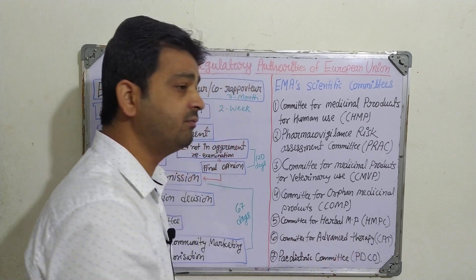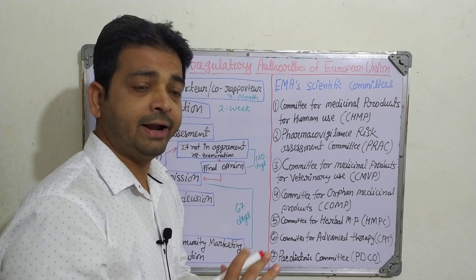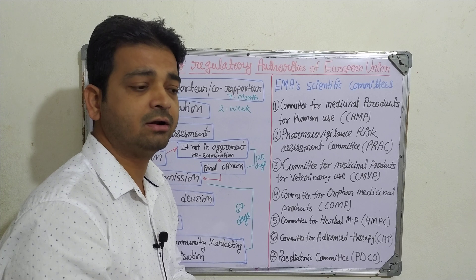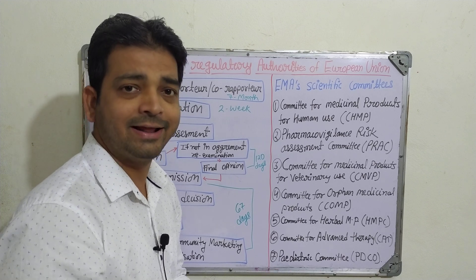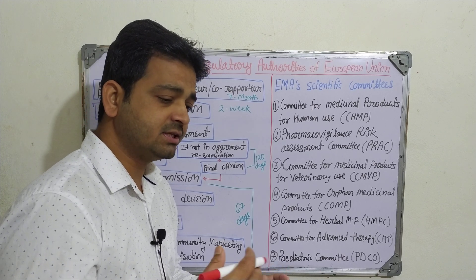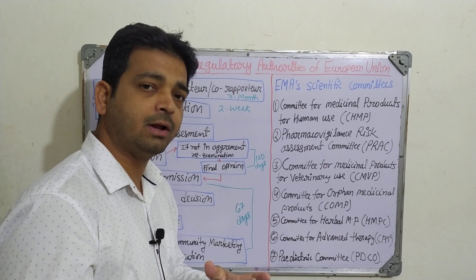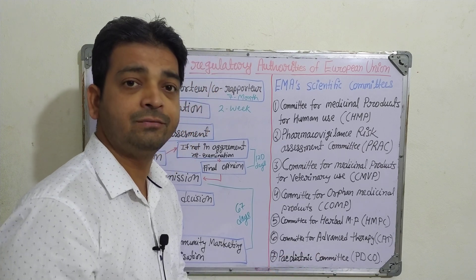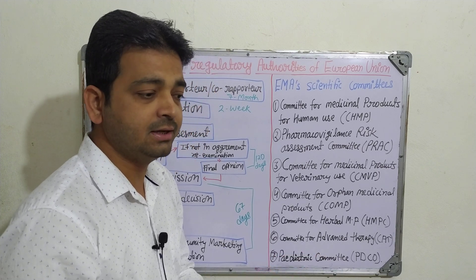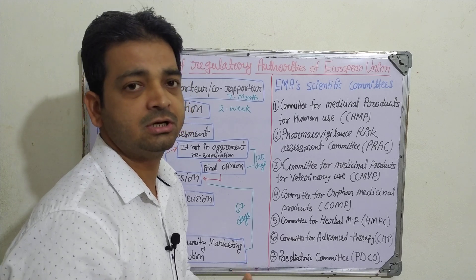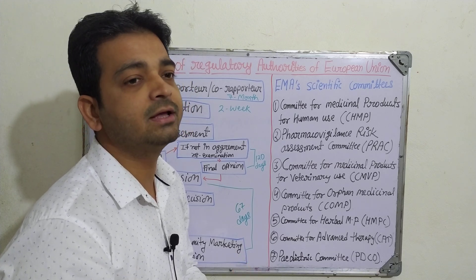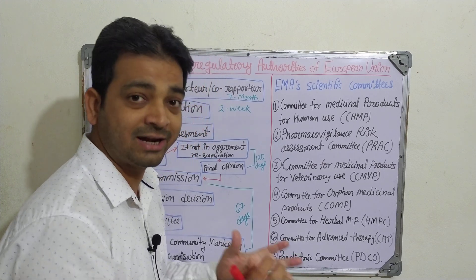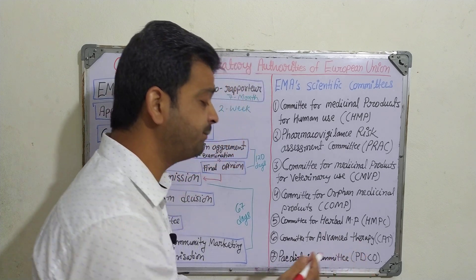The sixth is the Committee for Advanced Therapies. Advanced therapies include treatments for cancer, antivirals such as those needed for COVID-19, or life-threatening diseases and conditions. This committee reviews whether such therapies are safe. Safety and toxicity must be established first before considering therapeutic activity — this is the primary purpose of all regulatory bodies.